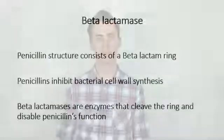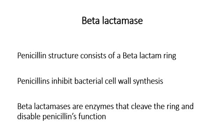Staphylococcus aureus has also developed ways to resist antibiotics. Penicillins consist of a beta-lactam ring, and in response, these bacteria have formed a beta-lactamase enzyme that cleaves the ring, rendering the antibiotic ineffective and disarming it from killing the bacteria. In summary, the three main virulence mechanisms of Staphylococcus aureus are: Protein A to avoid antibody-dependent cell-mediated cytotoxicity, teichoic acids for mucosal binding, and beta-lactamase enzymes for antibiotic resistance.